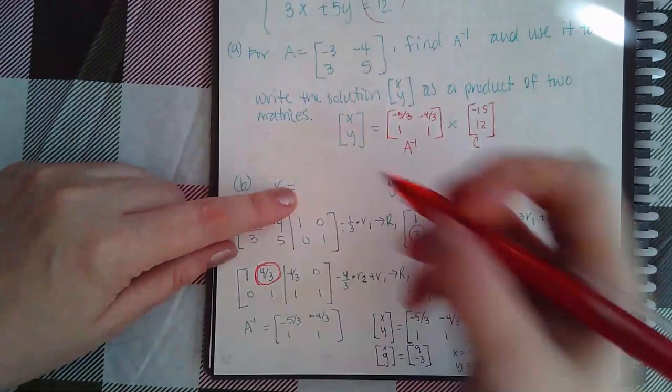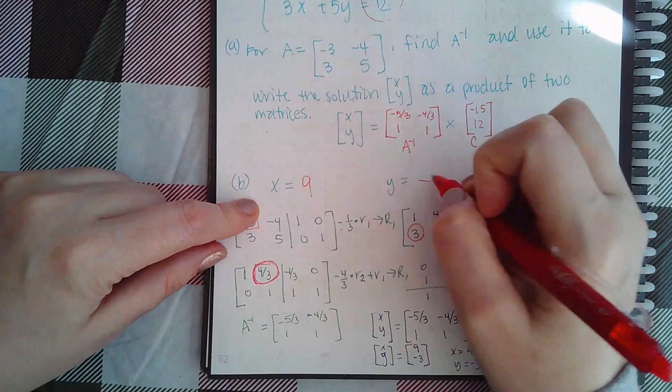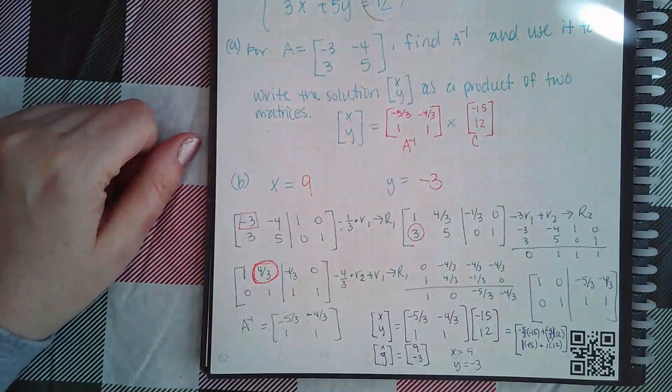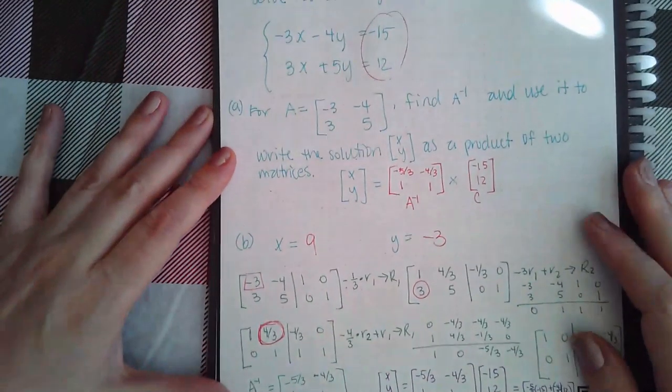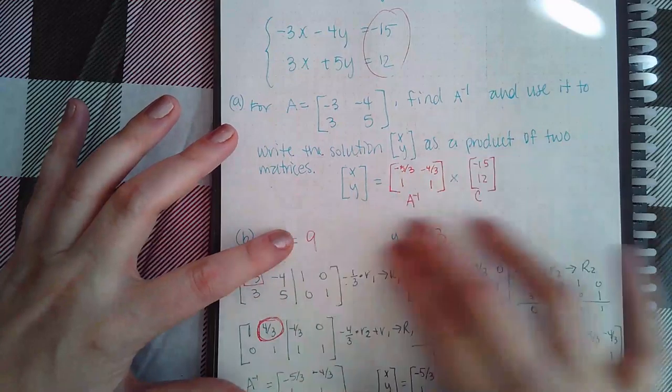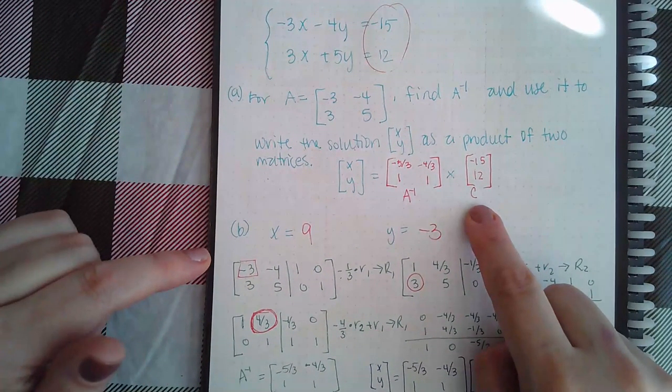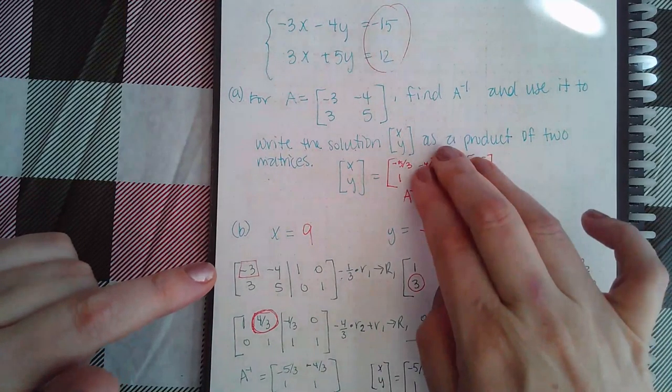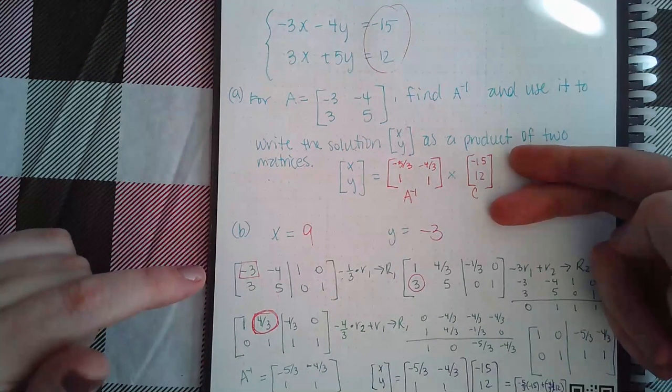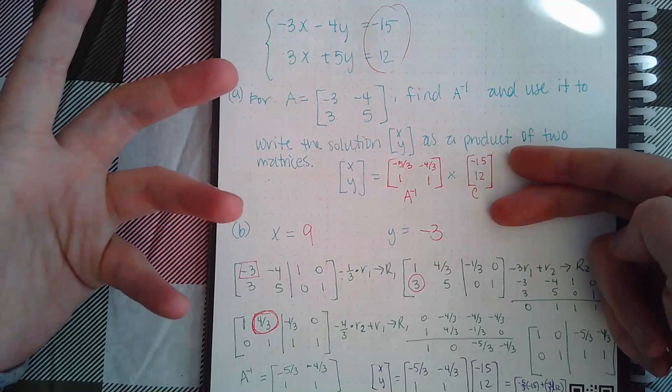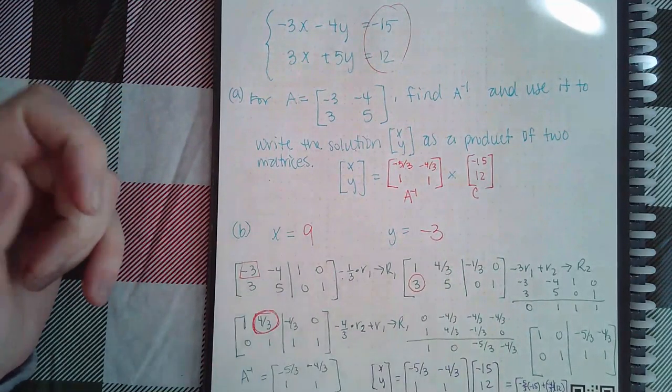And so that would be what you type in here, x is nine and y is negative three. And so the only thing you need to enter in Alex is these responses here. Type in the inverse once you figure out what it is. Type in your constants there. And then once you get that multiplication, the way we learned multiplication in a previous topic, you can figure out what x and y are.